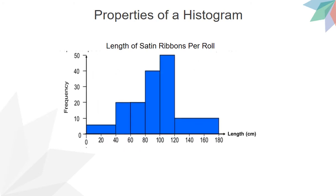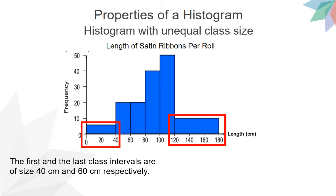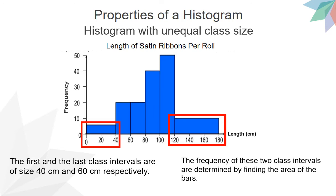For this histogram, notice that two of the class intervals are of different sizes — that is, the first class interval and the last class interval. The first and the last class intervals are of size 40 cm and 60 cm respectively. So, for this histogram, it is also known as a histogram with unequal class size. Hence, to determine the frequency of these two class intervals, we have to find the area of these two bars. For the first bar, the height of the bar which is 5, multiplied by the width of the bar which is 2 units. Therefore, the area is 10, so the frequency of this class interval is 10.